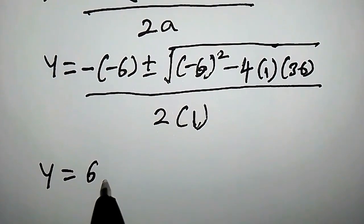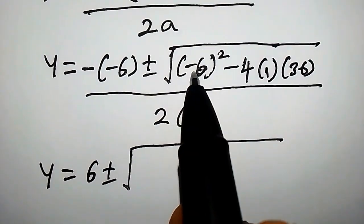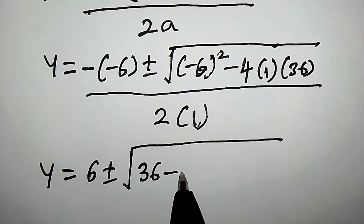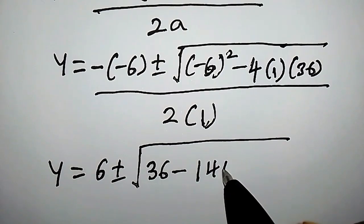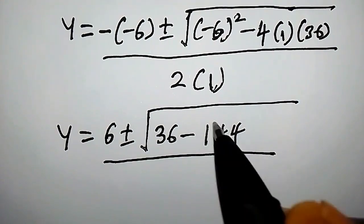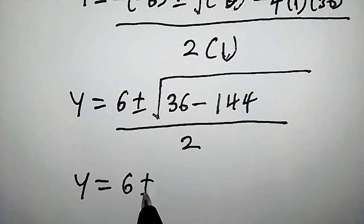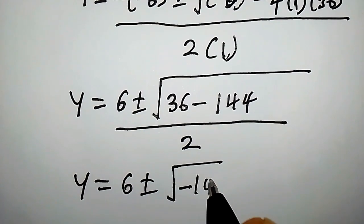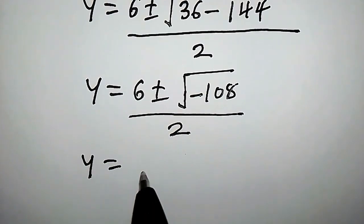Proceeding further: y equals 6 plus or minus square root of minus 6 squared, that is 36, minus 4 times 1 times 36, that is 144, divided by 2 times 1, that is simply 2. So y equals 6 plus or minus square root of 36 minus 144, which is minus 108, divided by 2.